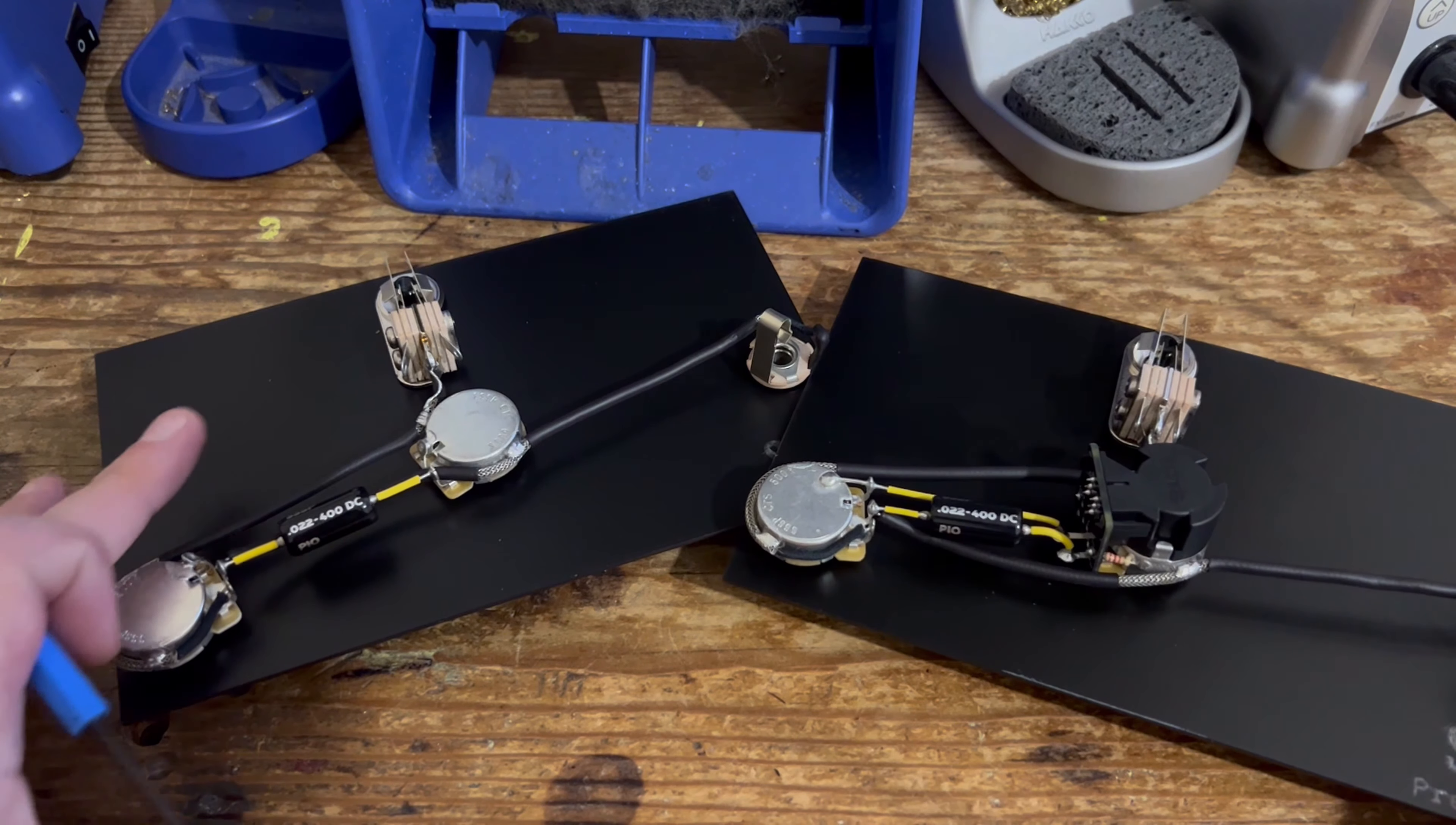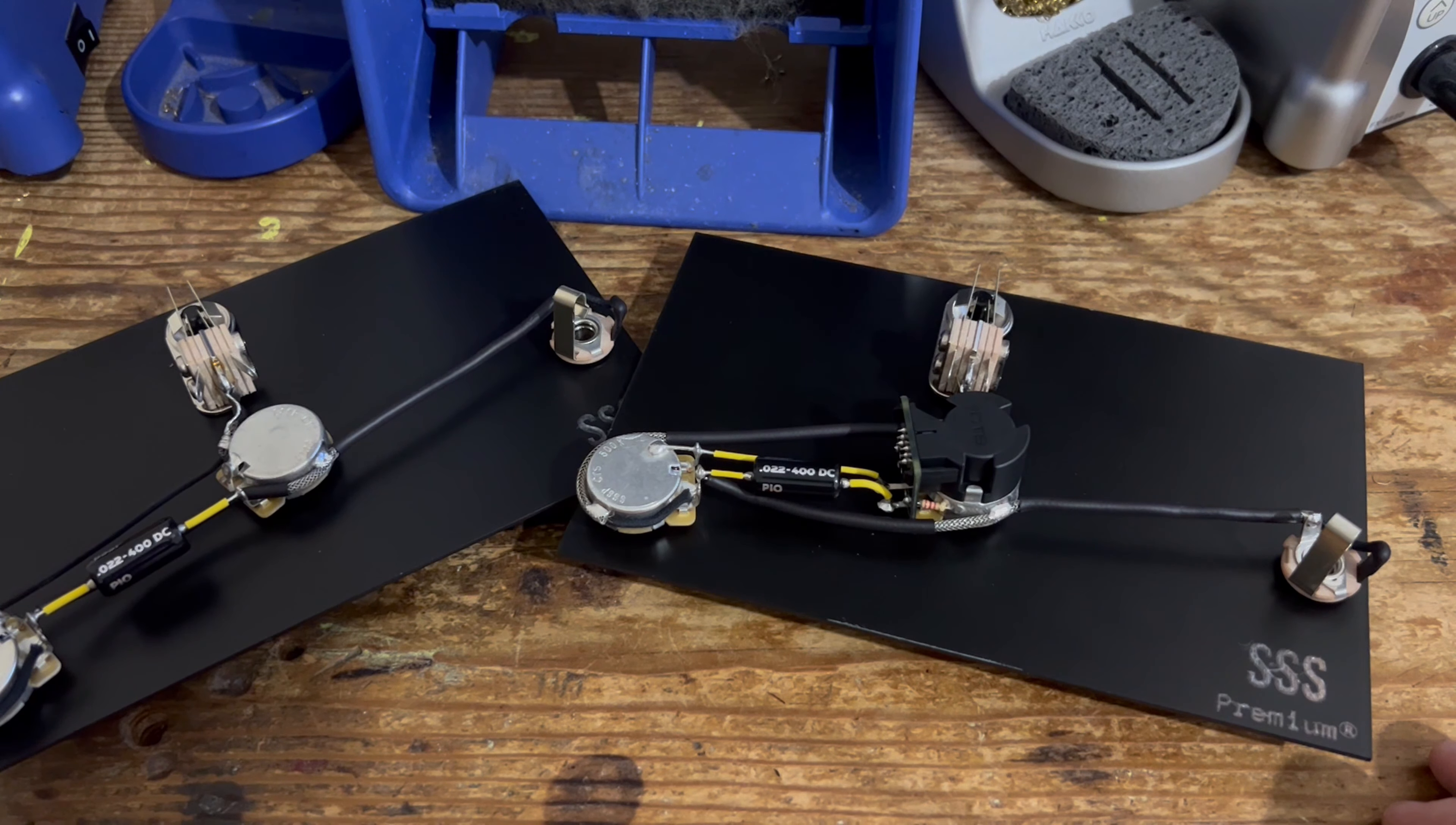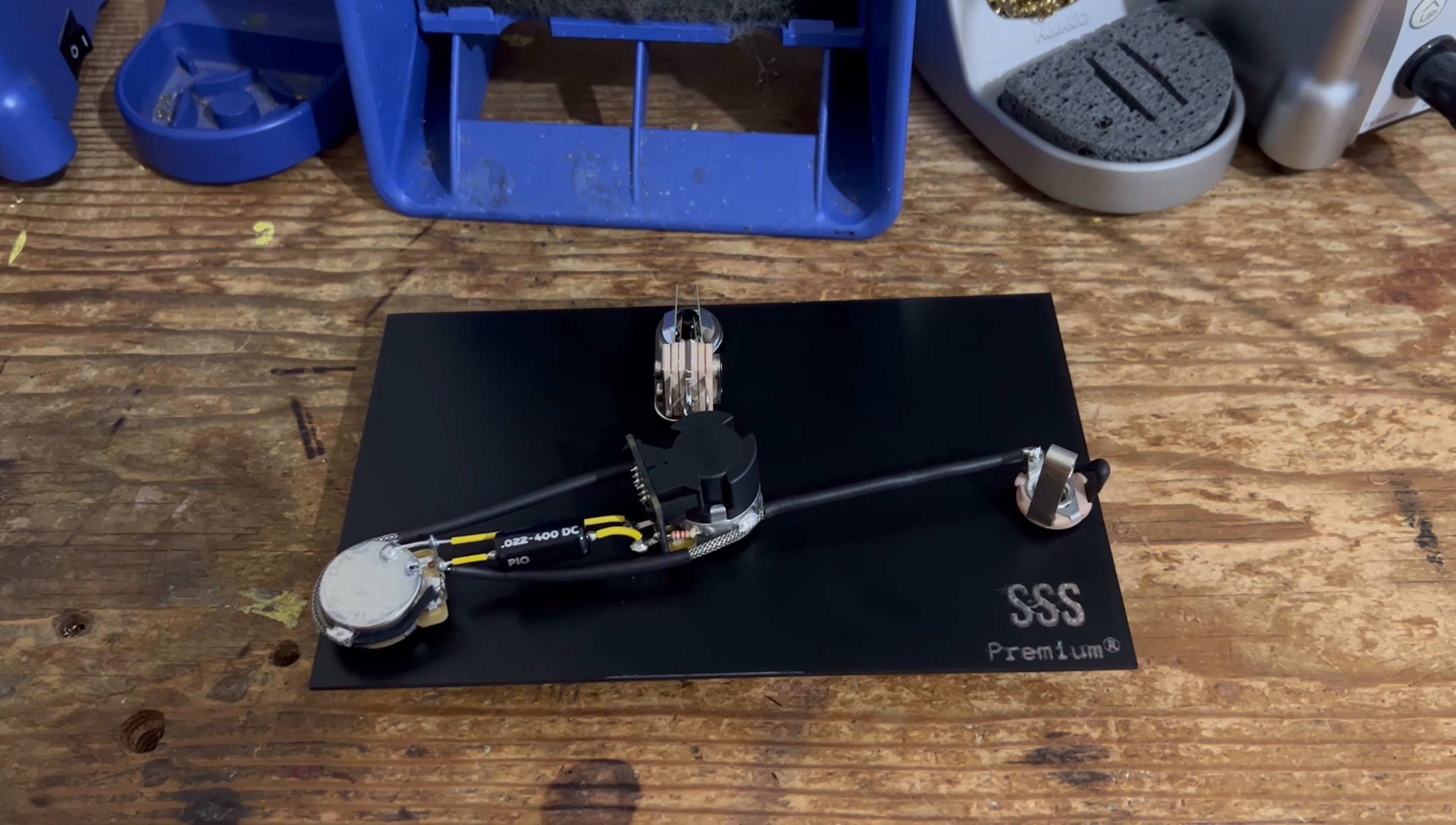In this video, we are demonstrating adding a push pull pot as a tone control, which acts as a master coil split. As it is again in a PRS style template, we will explore the PRS partial coil split using resistors.